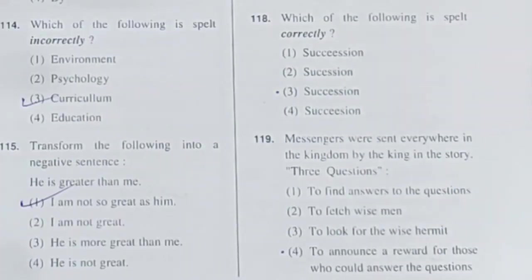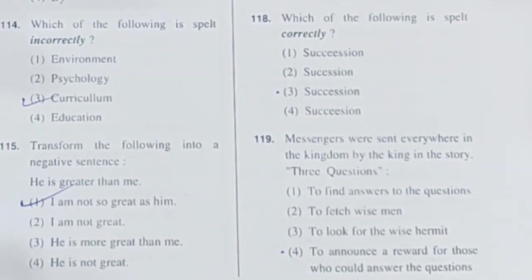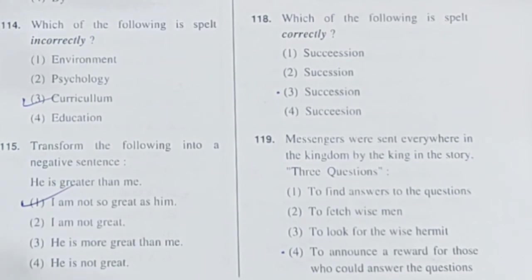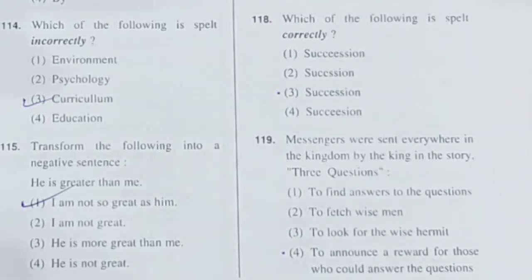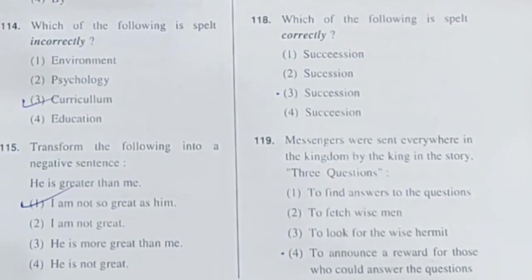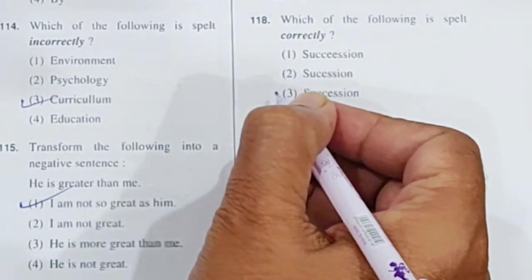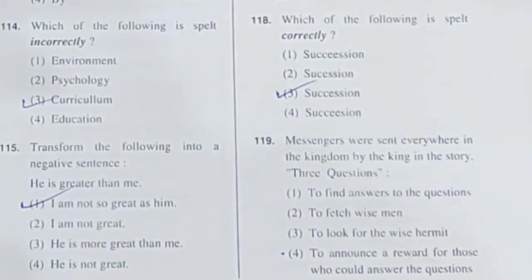Question 118: Which of the following is spelt correctly? The word in question is 'succession.' The correct spelling of succession is S-U-C-C-E-S-S-I-O-N. This can be seen in option 3. Option 3 is correct.